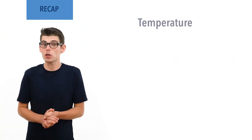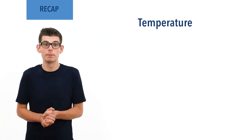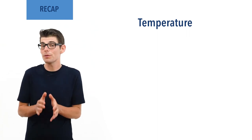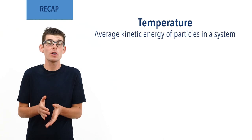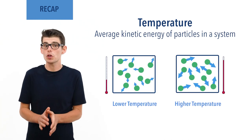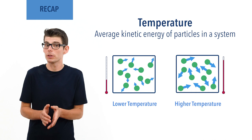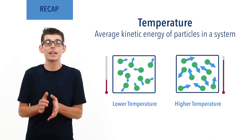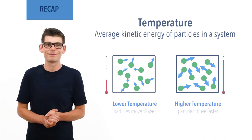Temperature is a measure of the heat content of a system. It is effectively measuring the average kinetic energy of particles within it. The higher the temperature, the more kinetic energy particles have, and the faster they are moving and vibrating. Recap done? Let's go.